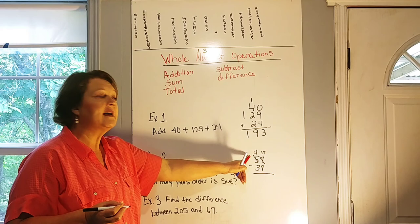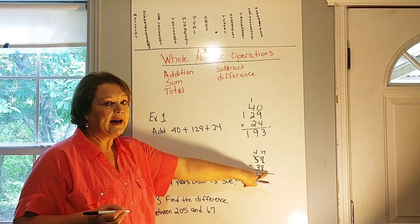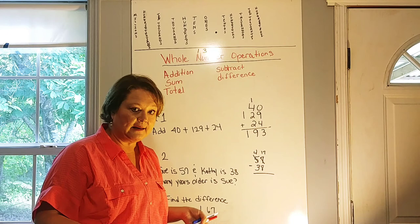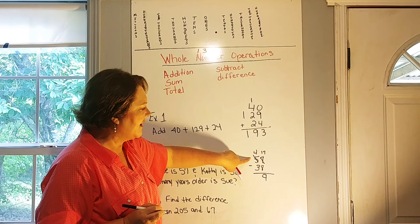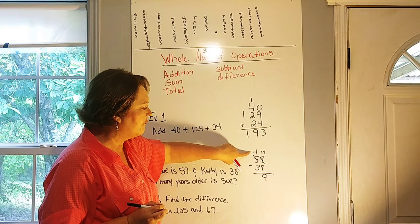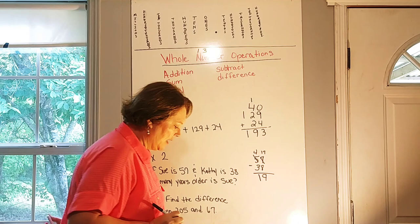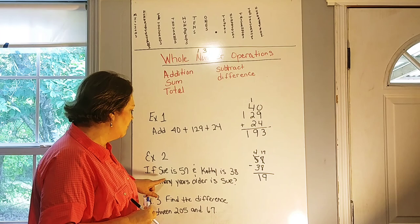So now we have 17 minus eight. We can do that, right? If we have 17 of something, we can easily give away eight. So 17 take away eight is going to be nine. And now let's look. We're no longer subtracting three from five because we borrowed that 10. There's only four tens left here now. So now we have four take away three, and that will leave us with one. So our answer is 19. So we would say that Sue is 19 years older than Kathy.